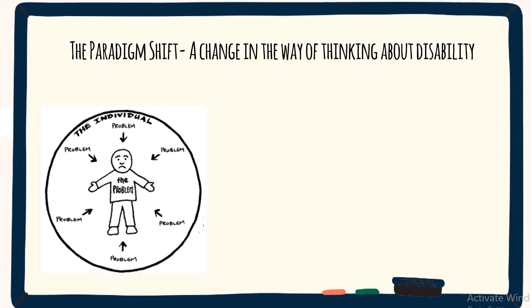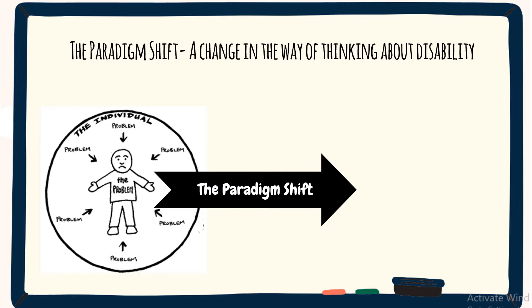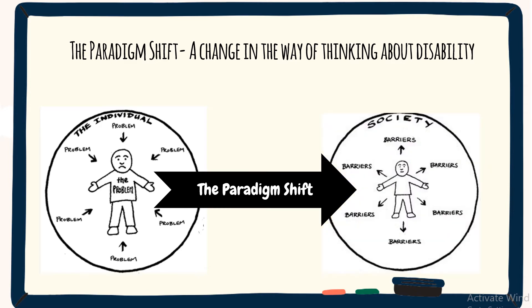Around the 1960s, a shift in this thinking became visible, with the idea of normalization being introduced and ideas of mainstreaming and integration starting to appear. While these terms don't equate to inclusion, they are aligned to a social model of thinking about disability and difference. A social model of disability was a whole new way of thinking. Let's take a look at each of these models in a little bit more detail.